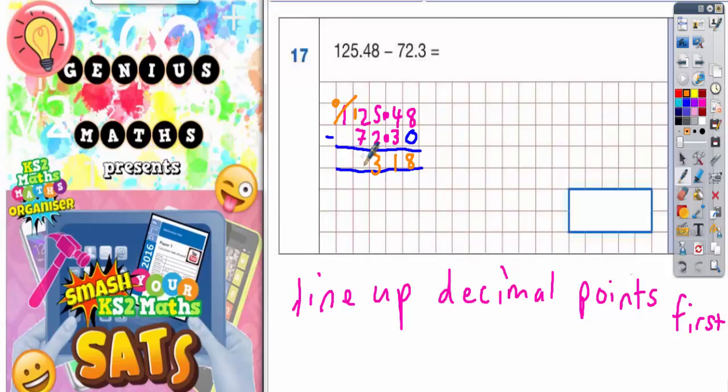12 take away 7 is 5. The only thing that's missing is your decimal point, and it must be lined up with these decimal points here. So our final answer should be 53.18, and that's what goes in our answer box.